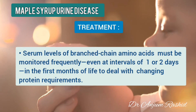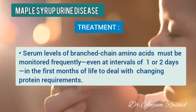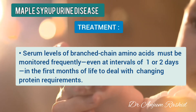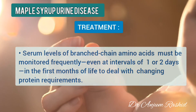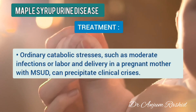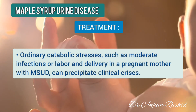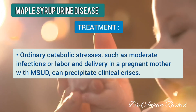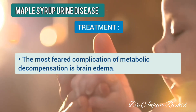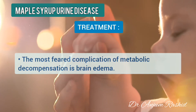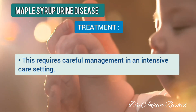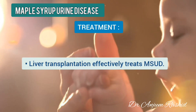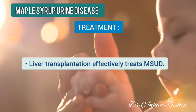Serum levels of branch chain amino acids must be monitored frequently, even at intervals of one or two days, especially in the first month of life, to deal with changing protein requirements. Ordinary catabolic stresses such as moderate infections or labor and delivery in a pregnant mother with maple syrup urine disease can precipitate clinical crisis. The most feared complication of metabolic decompensation is brain edema, which requires careful management in an intensive care setting. Liver transplantation effectively treats maple syrup urine disease.